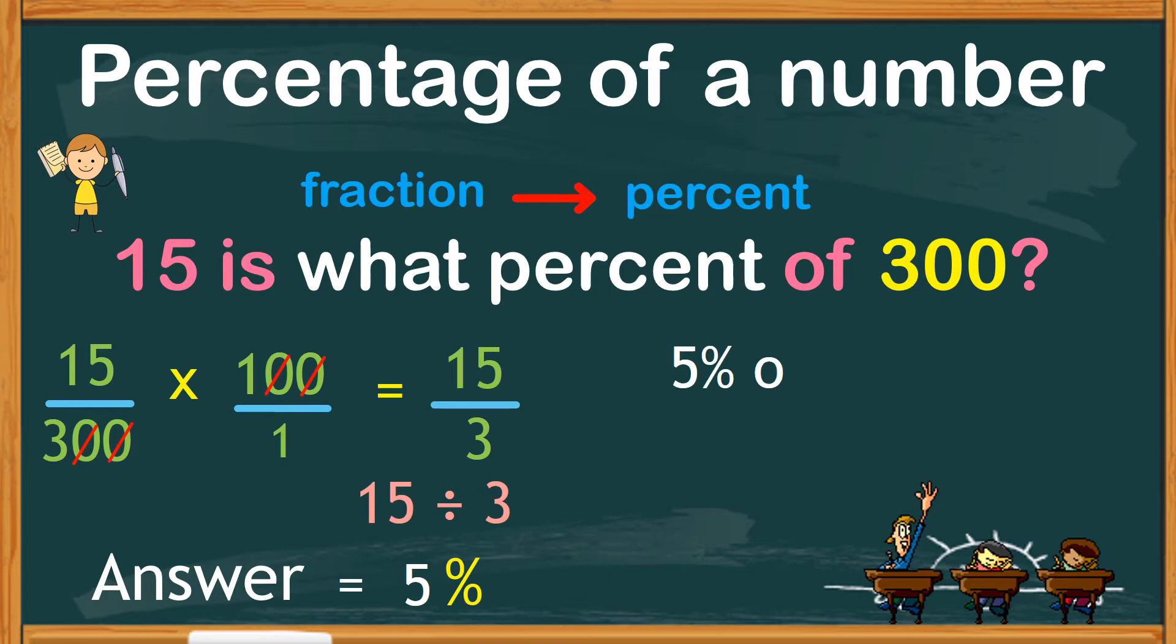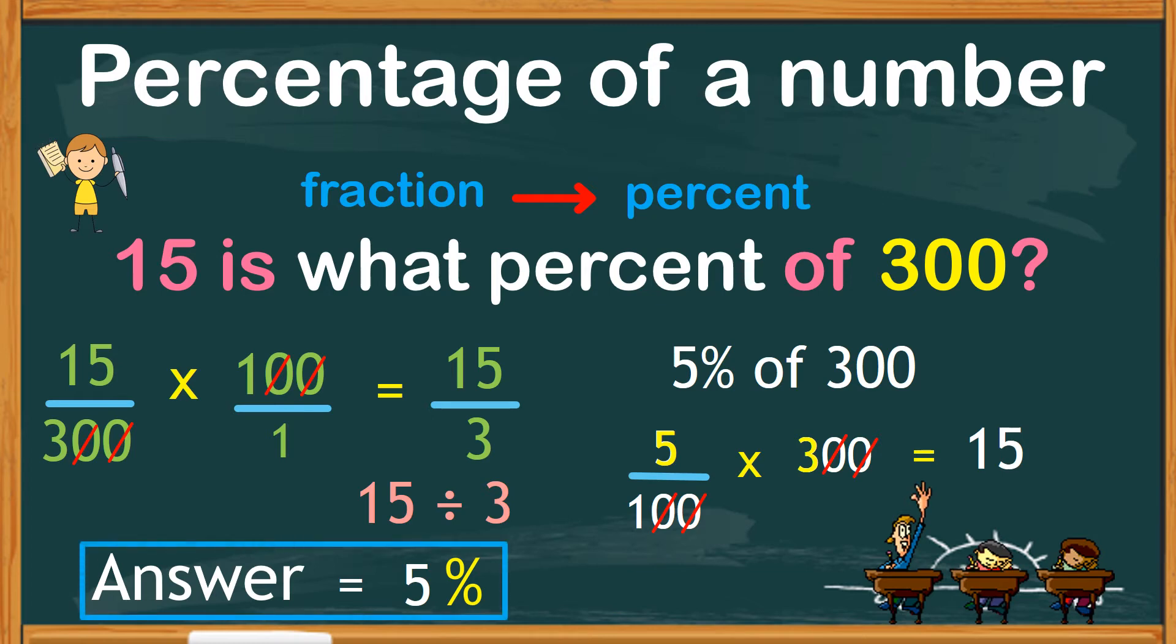We can check if our answer is correct. Let's see if 5% of 300 is 15. So, 5 over 100 times 300. Cancel the two zeros in the number above. Do the same with the two zeros in the number below. Now, we have 5 times 3, which is 15. Therefore, our answer is correct.